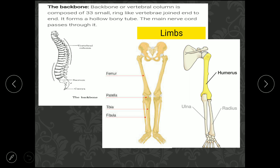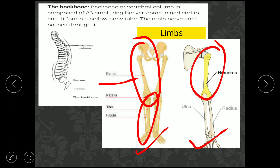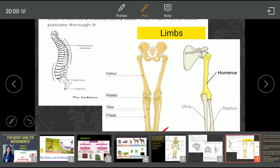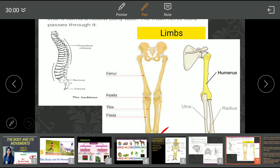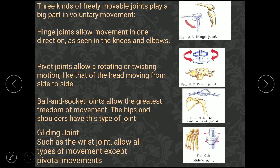There are two limbs: leg and hand. In the leg, the longest bone is called the femur. The leg also has the tibia and fibula. The hand has the humerus, radius, and ulna. The smallest bone in our body is in the ear and is called the stapes.